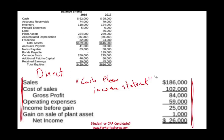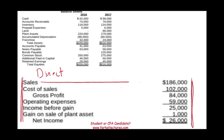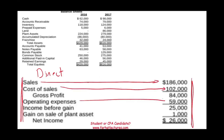For the direct method, what you do is examine each line on the income statement — each line separately — and you convert each line into cash flow.